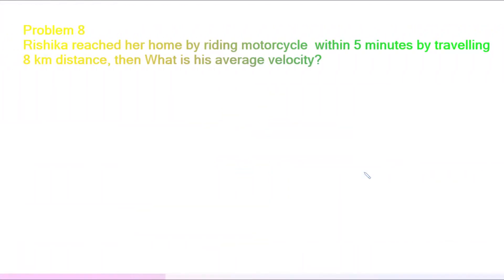Look at problem number eight: Rishika reached her home by riding a motorcycle within five minutes, traveling eight kilometers distance. What is her average velocity? We know that average velocity means total distance divided by time taken.